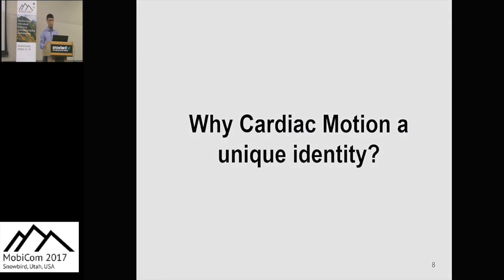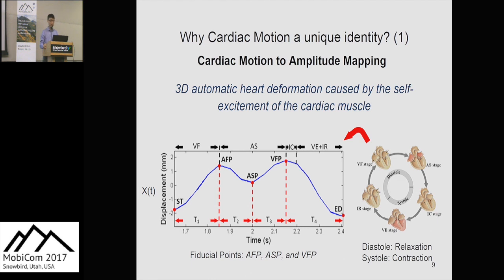A natural question is: why can cardiac motion serve as a unique identity? Cardiac motion is a 3D automatic deformation caused by the self-excitement of the cardiac muscle. A complete cardiac cycle includes five stages — three considered as heart relaxation and two as heart contractions. These contraction and relaxation periods correspond to peak and valley points in the heart displacement signal, called fiducial points, denoted as AFP, ASP, and VFP.